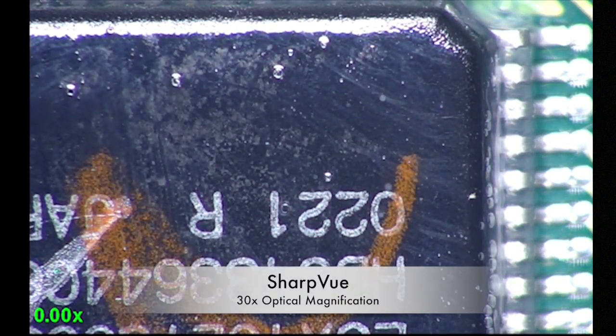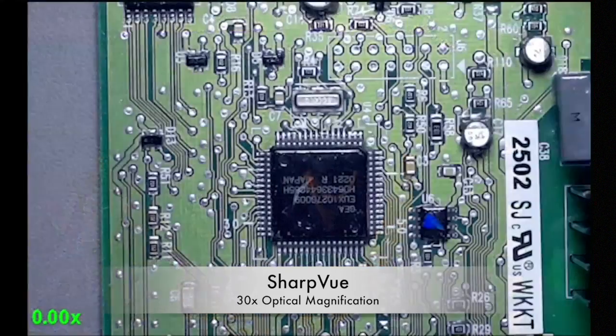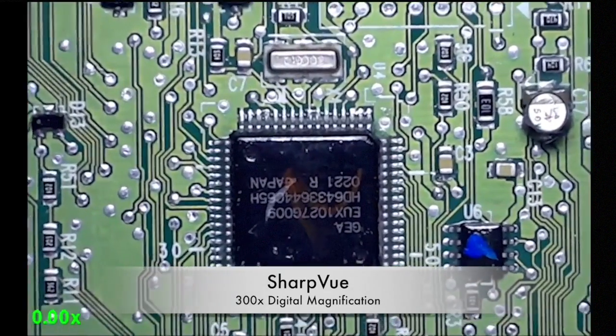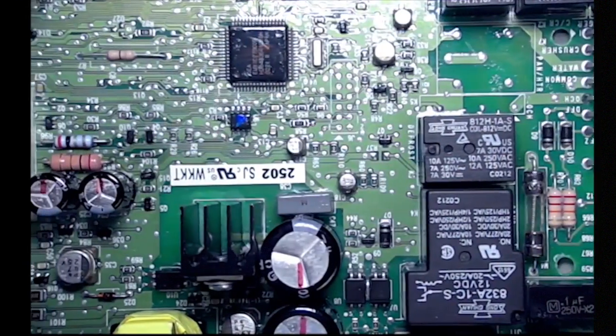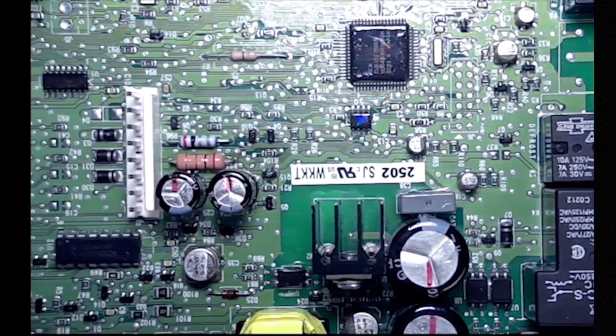The SharpView features an autofocus HD camera with optical magnification of up to 30 times and up to 300 times digital magnification, and produces stunning high-quality HD images without any distortion or delay with excellent depth of field.